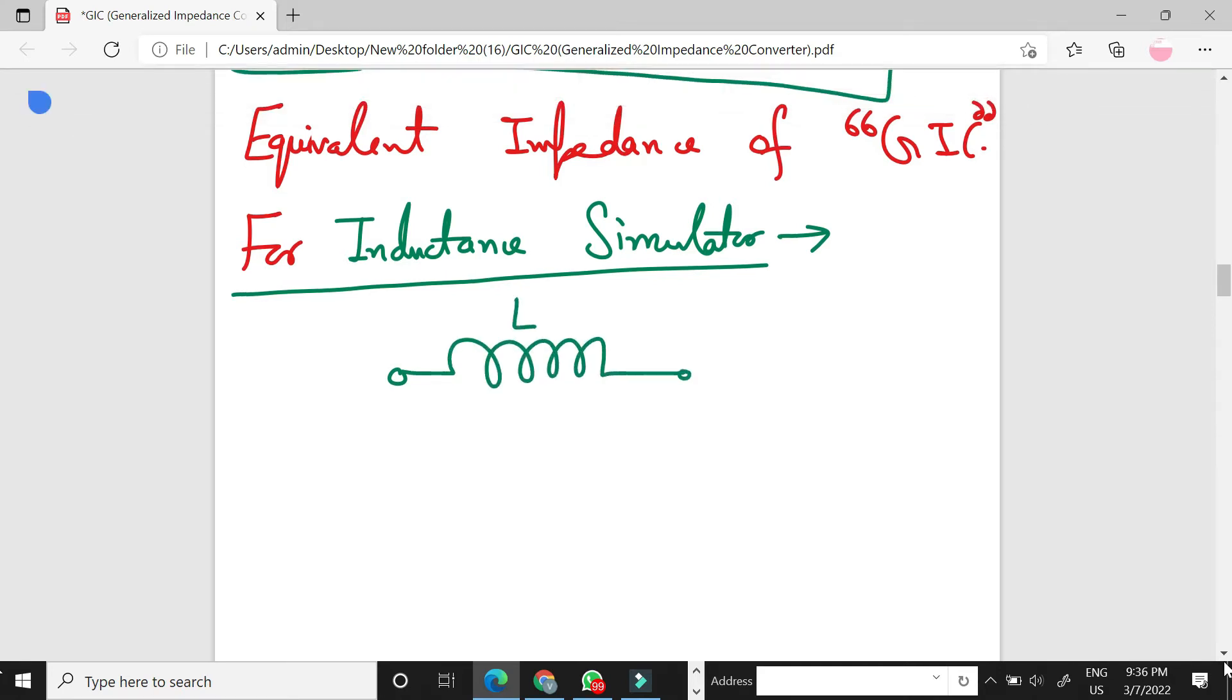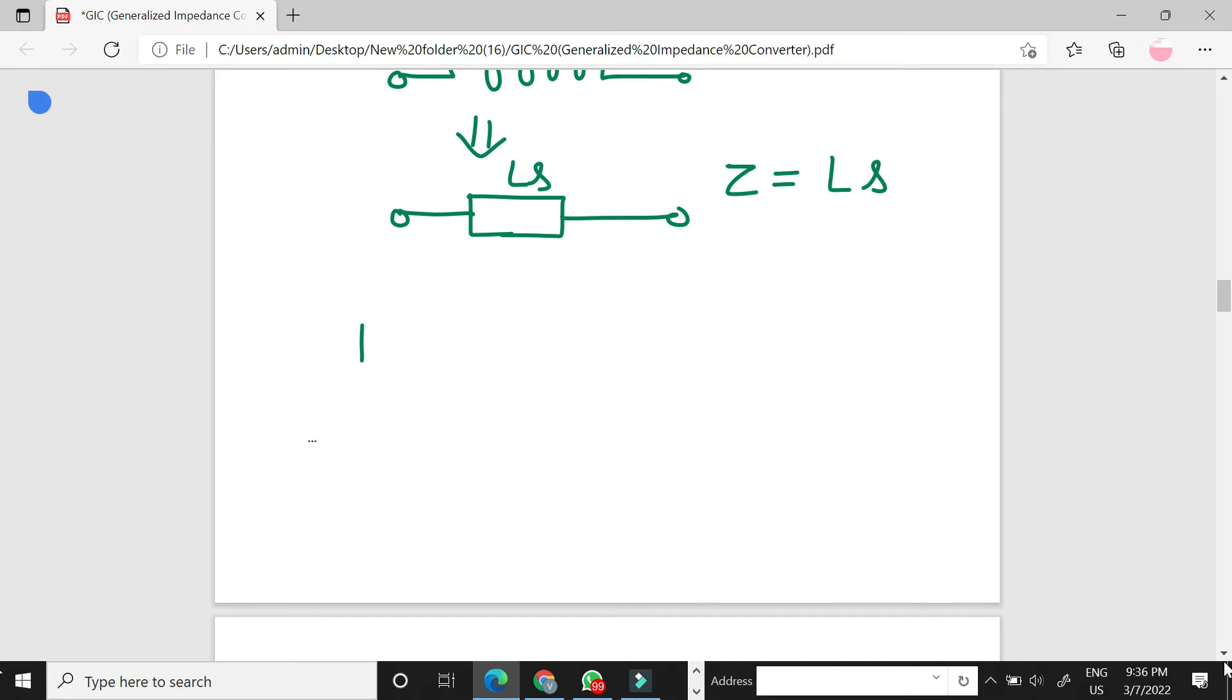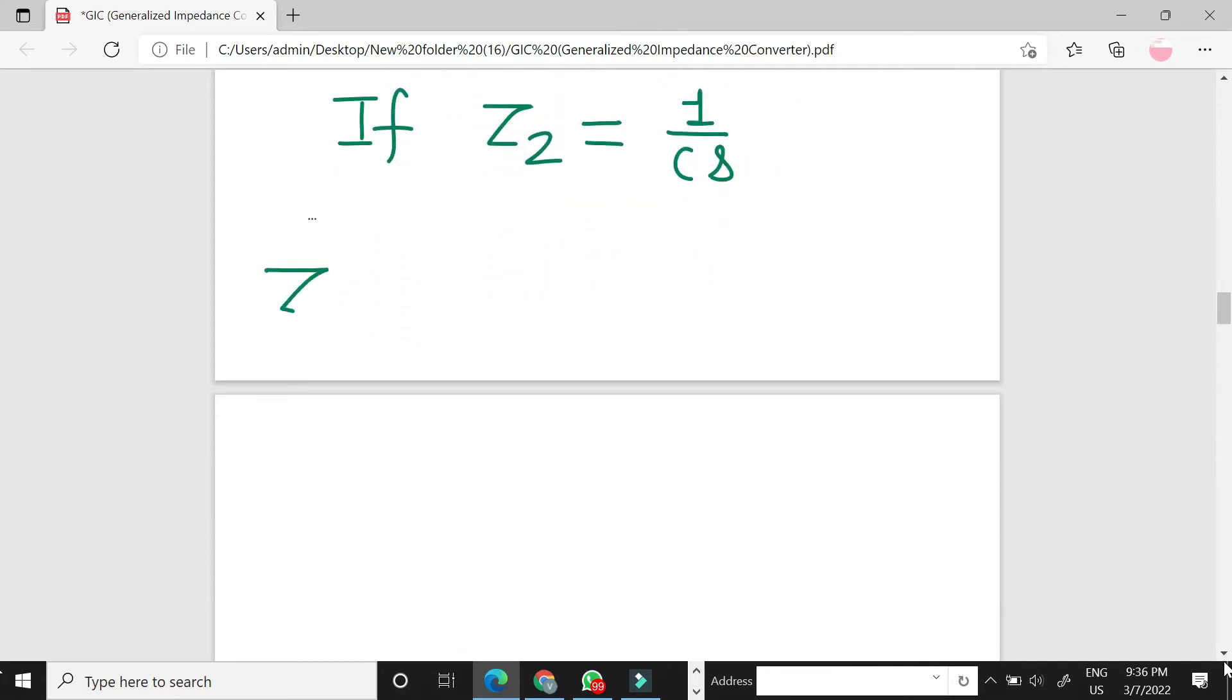ZL, the impedance of inductor, is LS. So Z is equal to LS. If Z2 is capacitor, then this is 1 upon CS. Then Zin is equal to Z2 is capacitor, 1 upon CS.